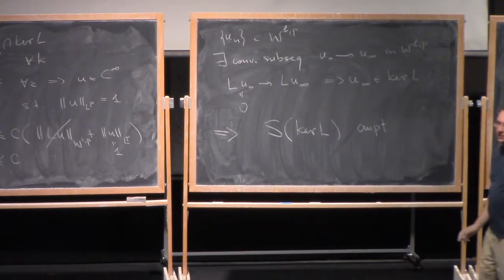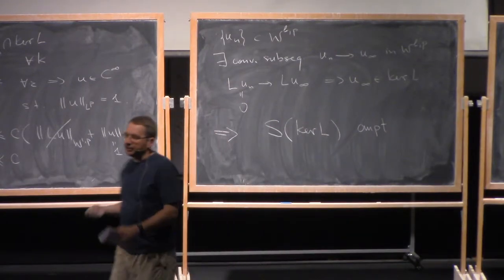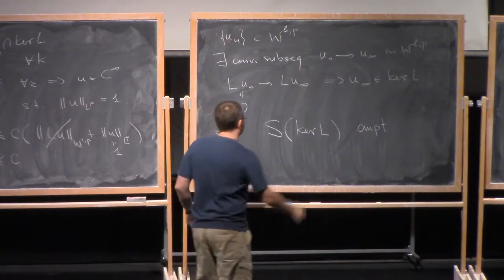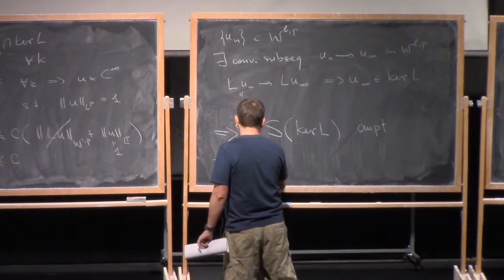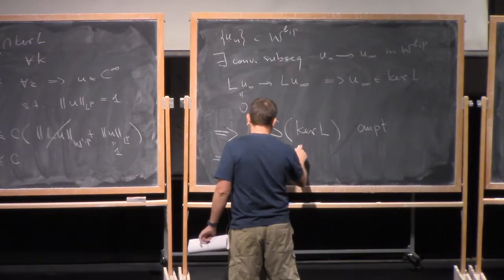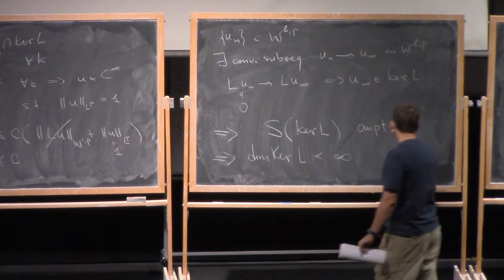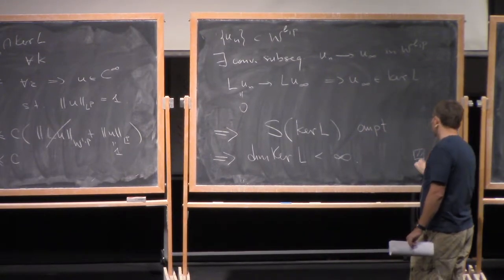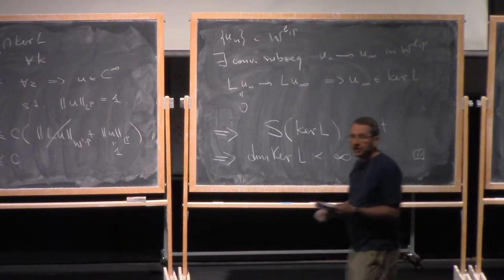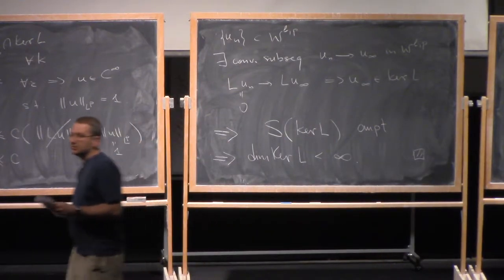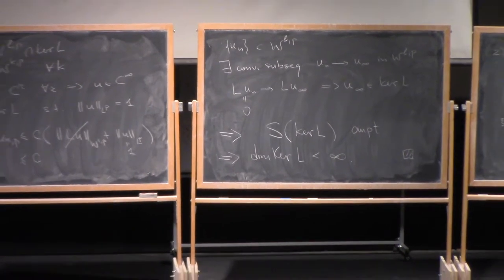And you know very well that if you take the unit sphere in a vector space, and it happens to be compact, then this vector space is finite dimensional. So this is how the proof works, and what we used in the proof was Sobolev embedding theorems and elliptic estimates, and that's what is essential about elliptic operators.